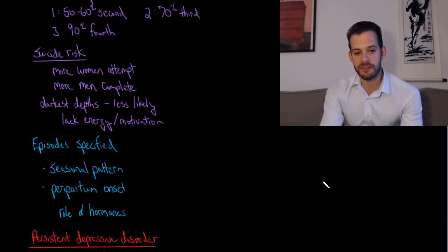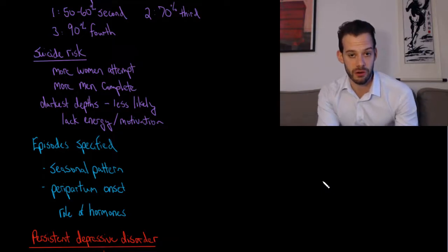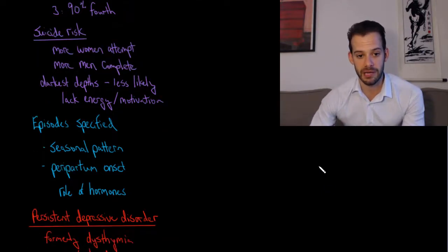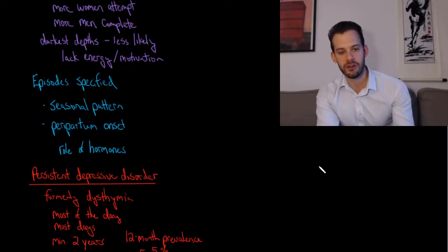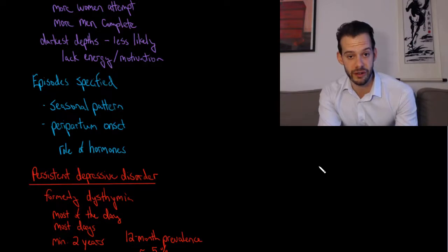We can also see ways of specifying when the episodes occur in major depressive disorder. And so two patterns that commonly occur are seasonal pattern and peripartum onset. So seasonal pattern is also referred to as seasonal affective disorder.